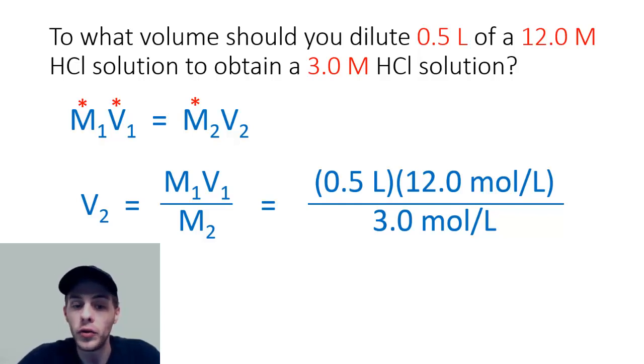Once you crunch this into your calculator, the answer that you're going to get for that second volume V2 is going to be 2.0 liters. And this makes sense because the volume is going to be much larger for a dilute solution than it is for the concentrated solution. For the concentrated solution we were only dealing with half a liter, and now we have a dilute solution that has a volume of 2 whole liters.